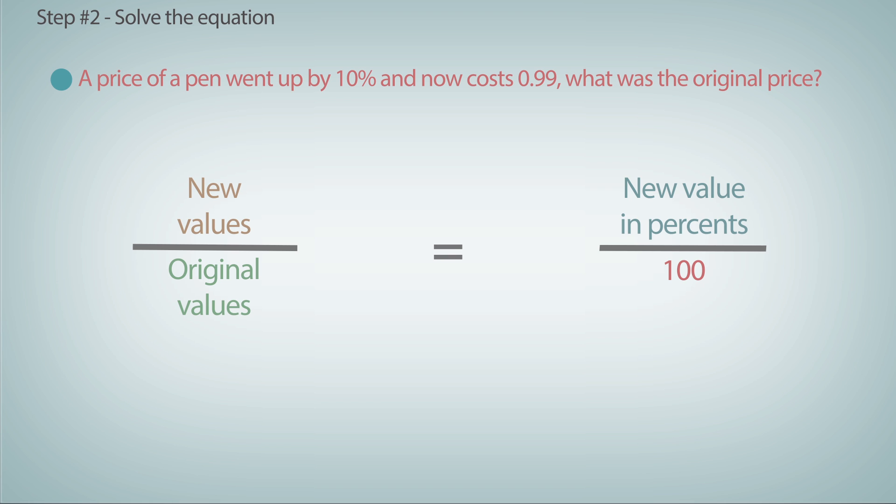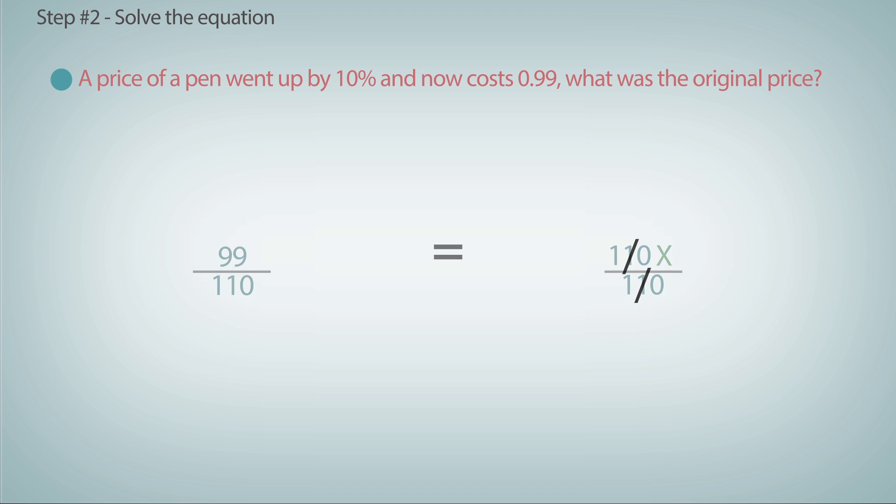For example, in this question, the original price is equal to 100%. The new price is 10% more than that, so it's 110% of the original price. We need to put the x where the original price is and solve for it. To continue solving this equation, follow the animation. The original price was 90 cents.